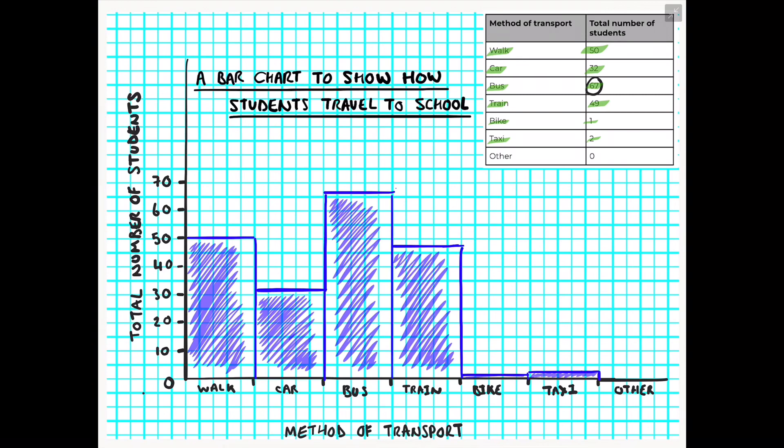You might also want to take it further and develop your wider geographical thinking. Which methods of transport are the most sustainable? Are these methods the most common methods taken by students to travel to school? We can then start to draw out this wider geographical perspective just by looking at these types of graphs and thinking about the data further.